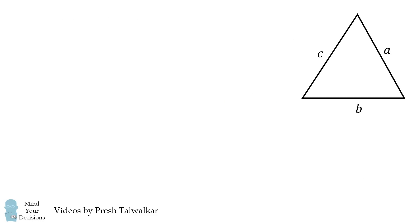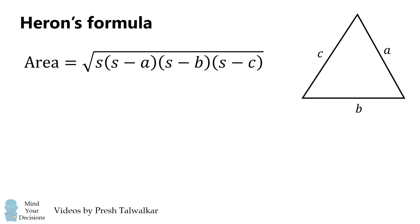Finally, we have Heron's formula for the area of a triangle. It equals the square root of S multiplied by (S minus A) multiplied by (S minus B) multiplied by (S minus C), where S is the semi-perimeter.